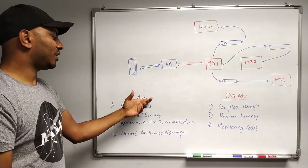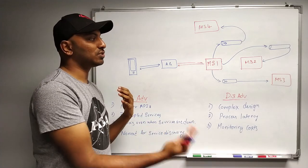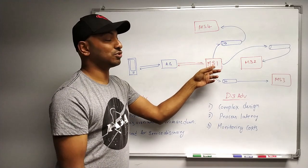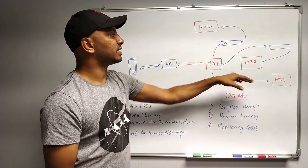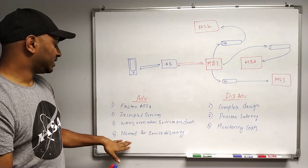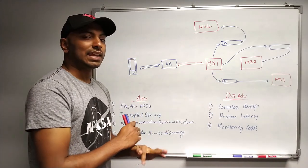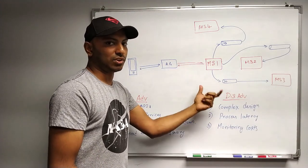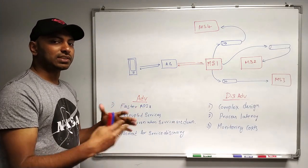The advantages of asynchronous inter-service communication: first, APIs are faster because we are not waiting for responses from other microservices — we update the queue and return the response. Second, services are decoupled and not affected by each other's availability. Third, the system works even when services are down. Fourth, there is no need for service discovery — the microservice only needs to know the address of the distributed queue and the queue or topic name, which can be hard-coded.